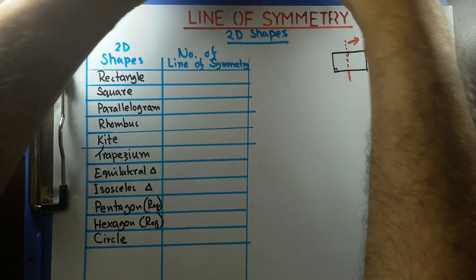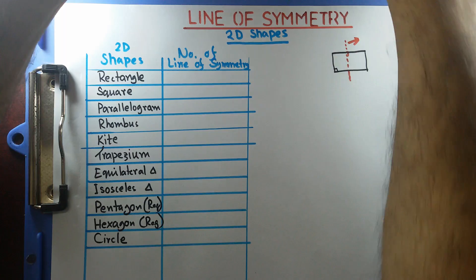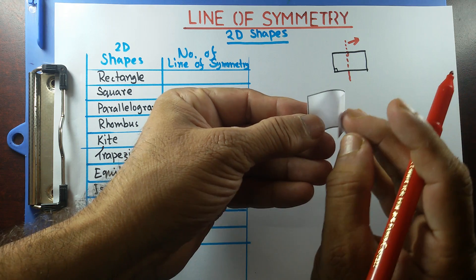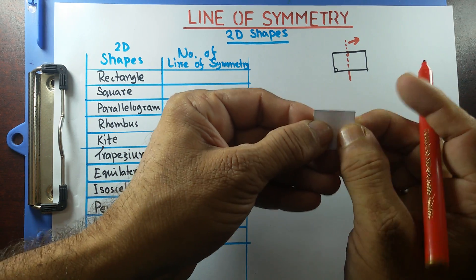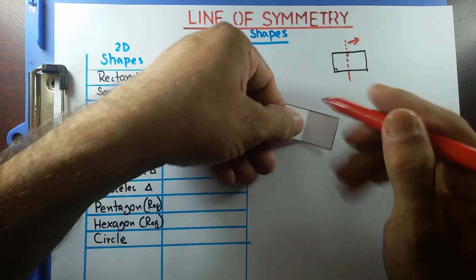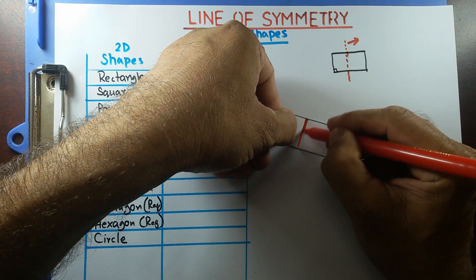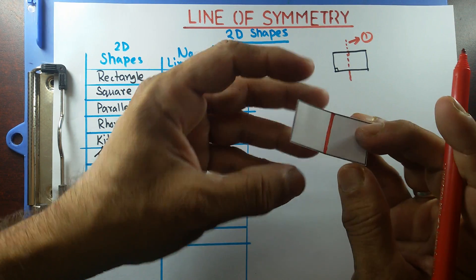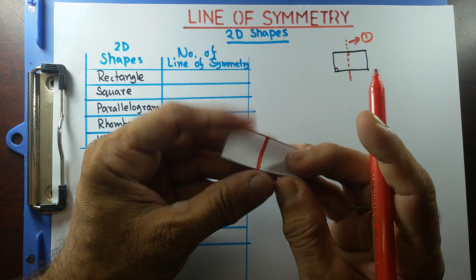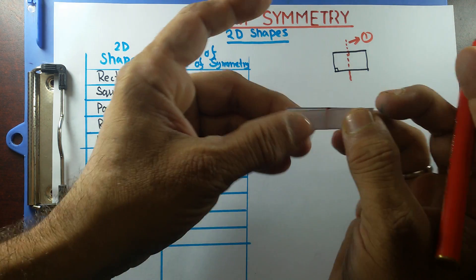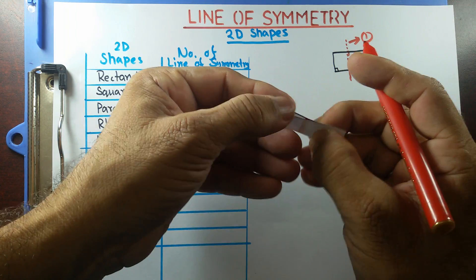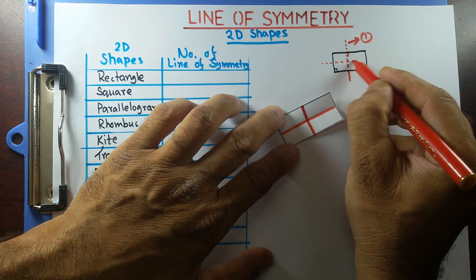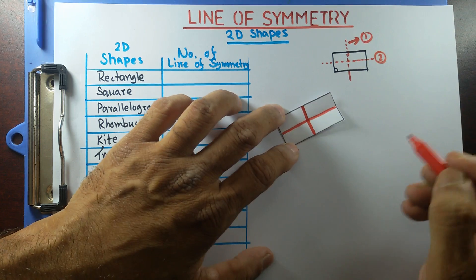I have one rectangle here. Opposite sides are parallel. If I fold it vertically through the middle, then this line that I fold the shape on is one line of symmetry. Is there any other way? Yes — if we fold it horizontally, I can make a congruent shape on this side and another congruent shape on that side. This is another line of symmetry.